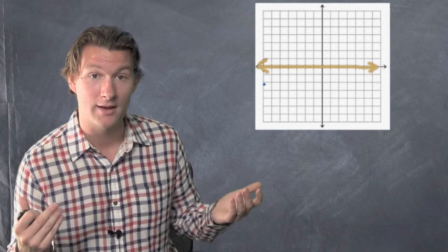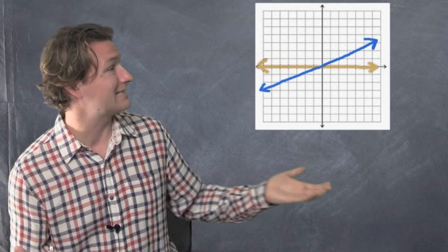Now, how about a line with a positive slope? You've got a blue line here, and it's going up because a positive slope goes up.